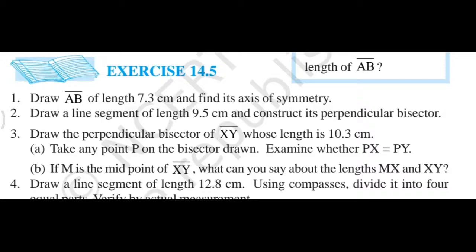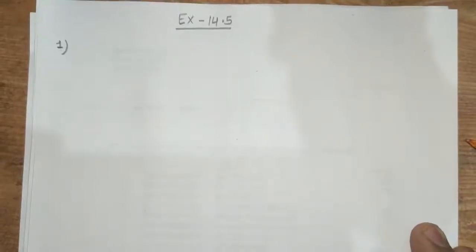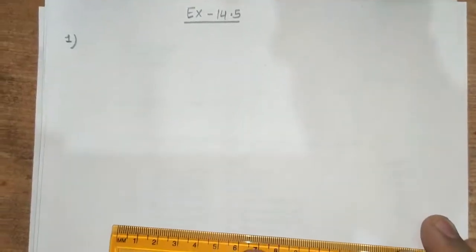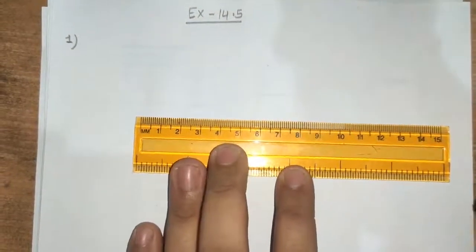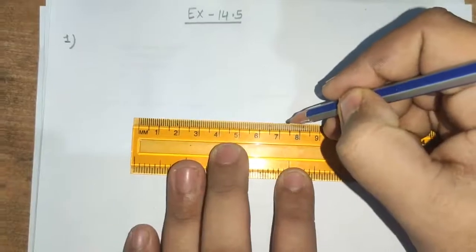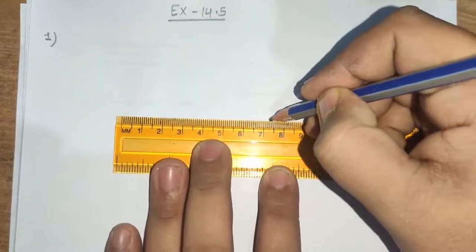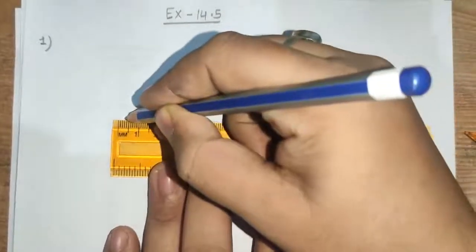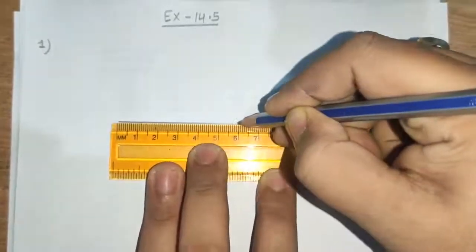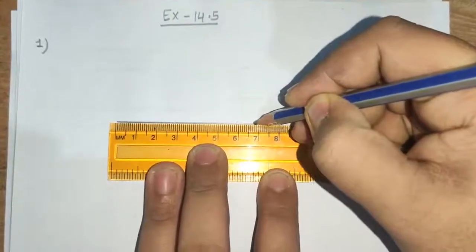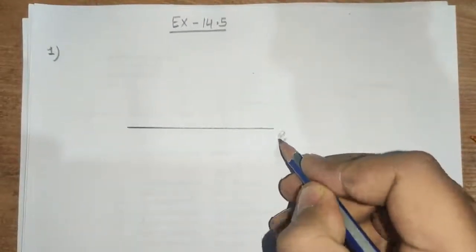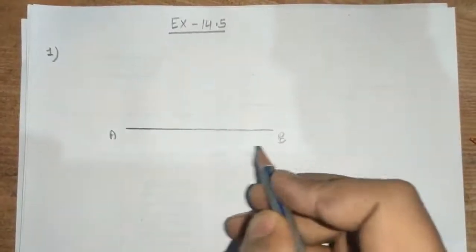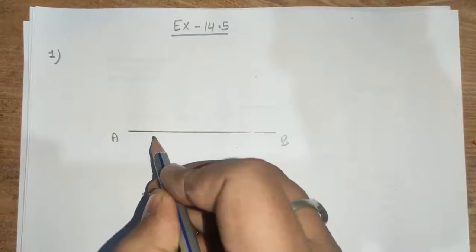In question number 1 of exercise 14.5, first of all, draw AB which is 7.3 cm. Here it is 7.3 cm. We will draw line segment AB of 7.3 cm. After this, AB, this is 7.3 cm.